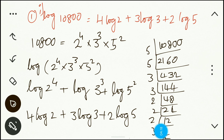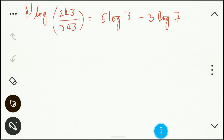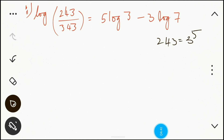Moving to the second question: show that log(243/343) equals 5 log 3 minus 3 log 7. We follow the same approach — find the prime factorizations. The prime factorization of 243 is 3⁵, and the prime factorization of 343 is 7³.